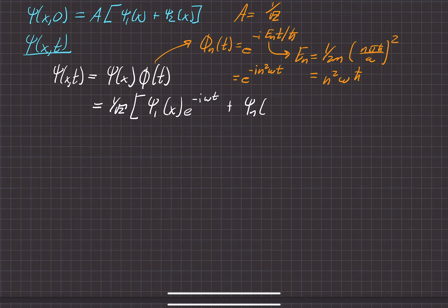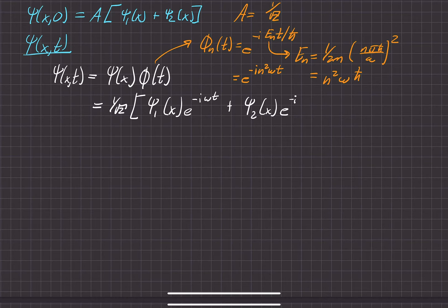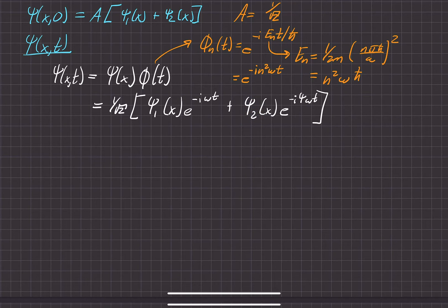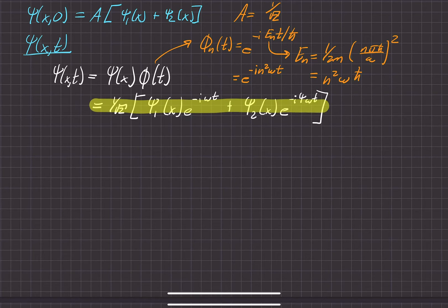Plus ψ sub 2 — this is the second energy level — and then the time-dependent form is negative i with the energy level of 2. So 2 squared is, of course, 4 omega t. So that is the general form of the wave function here.